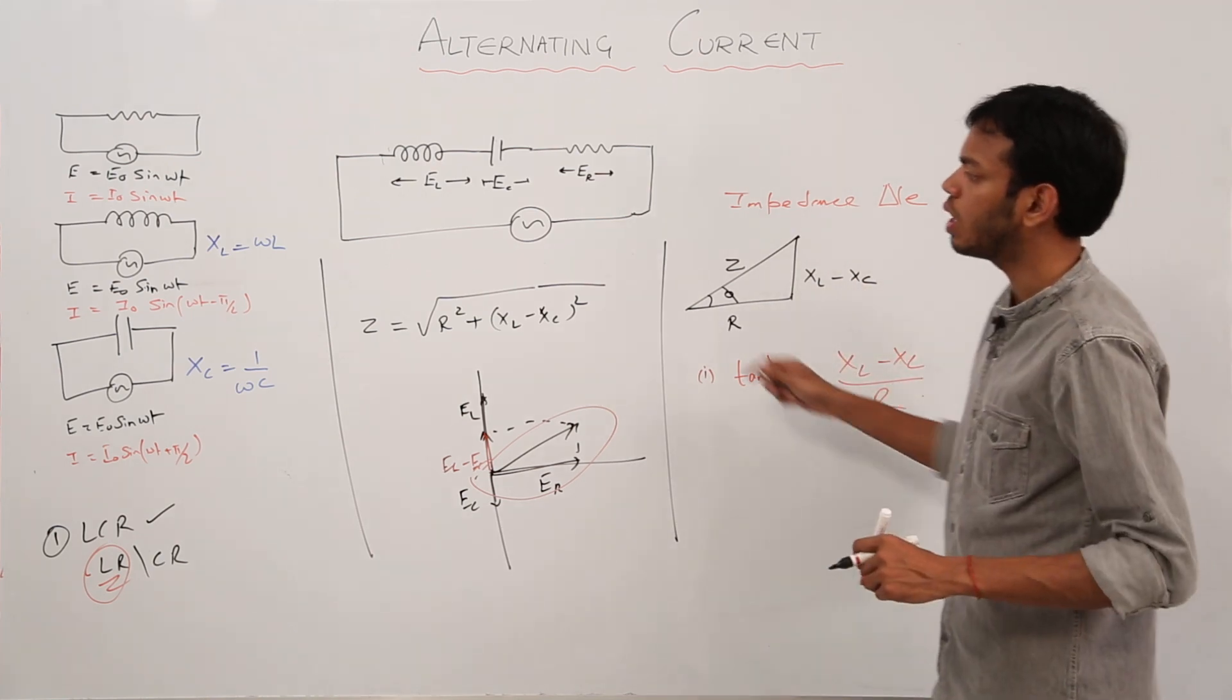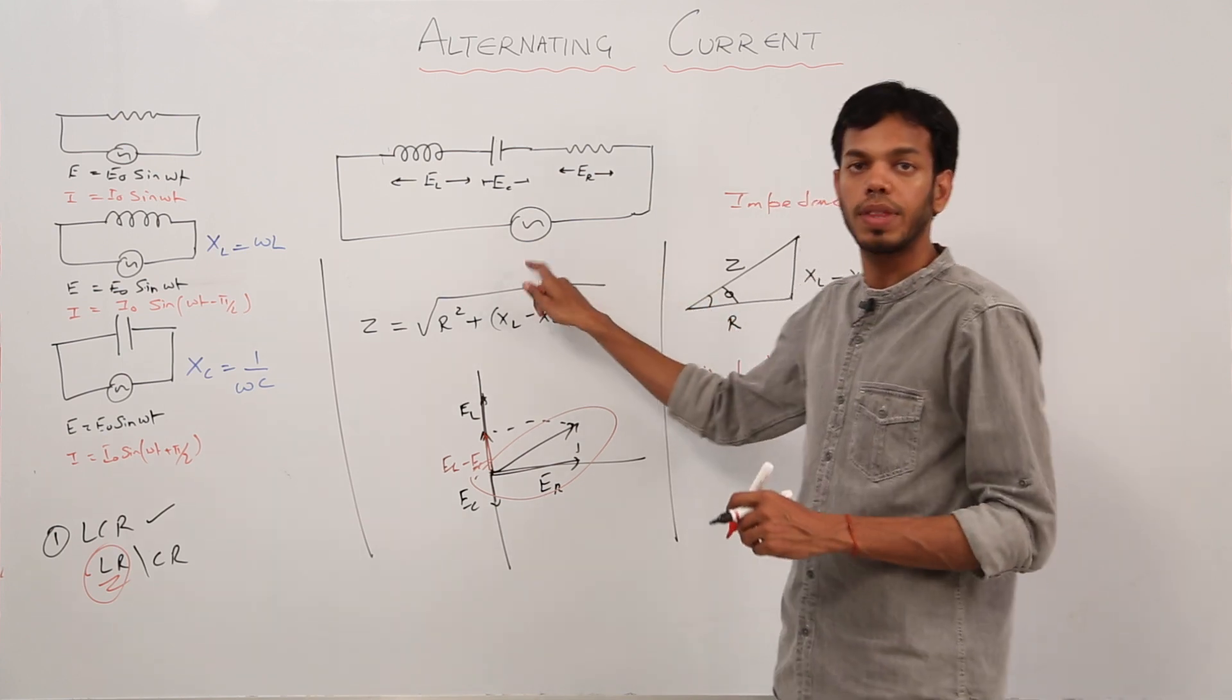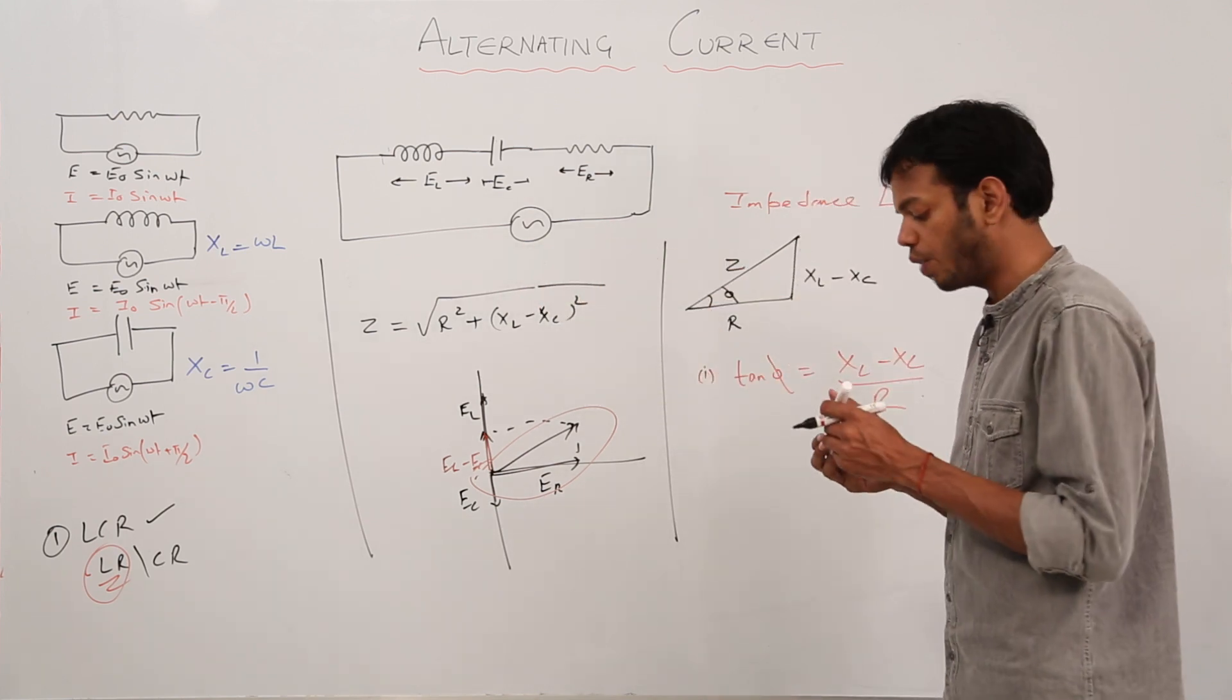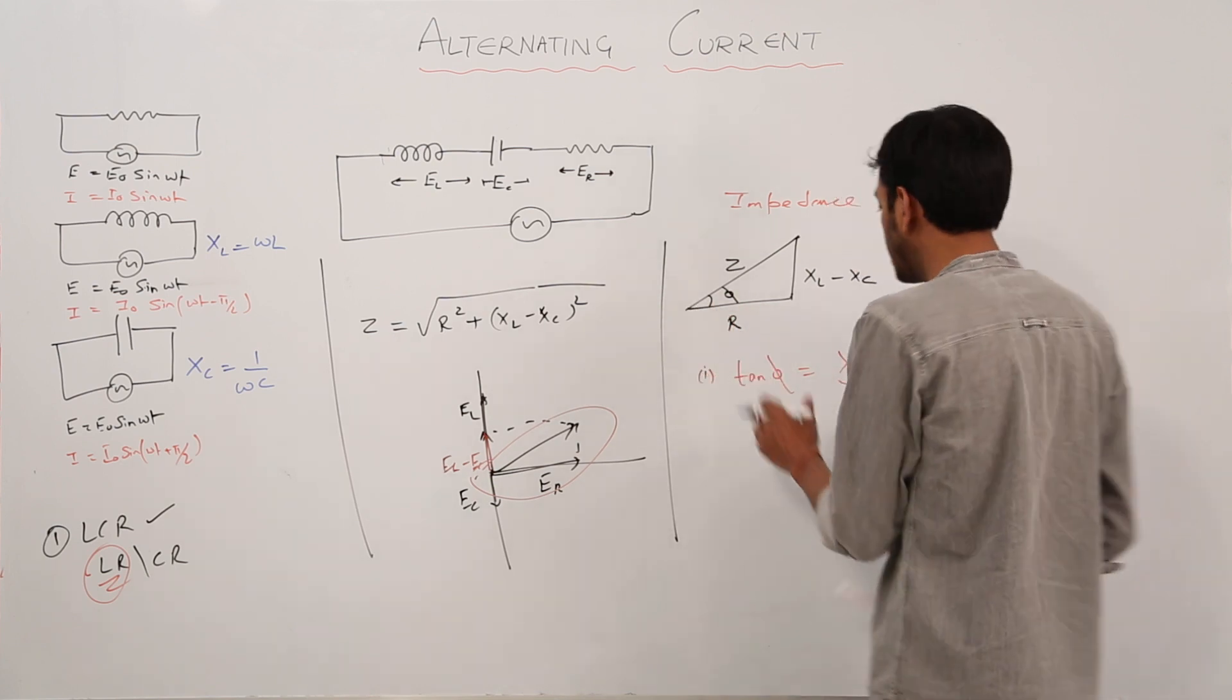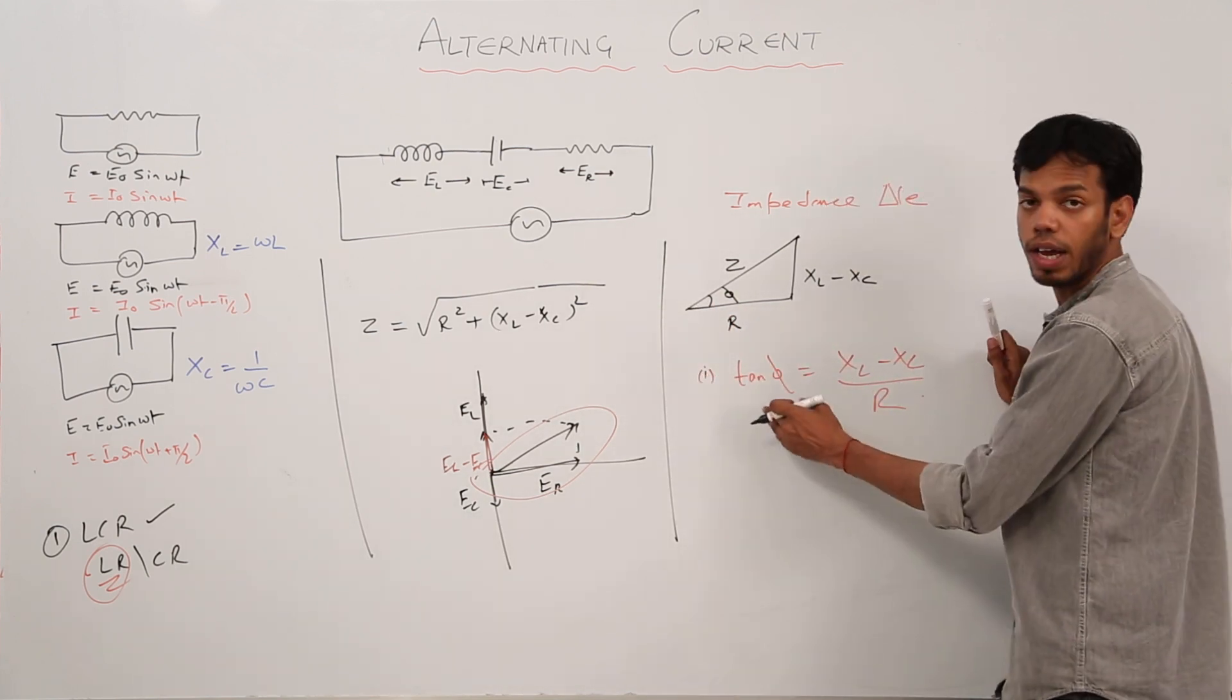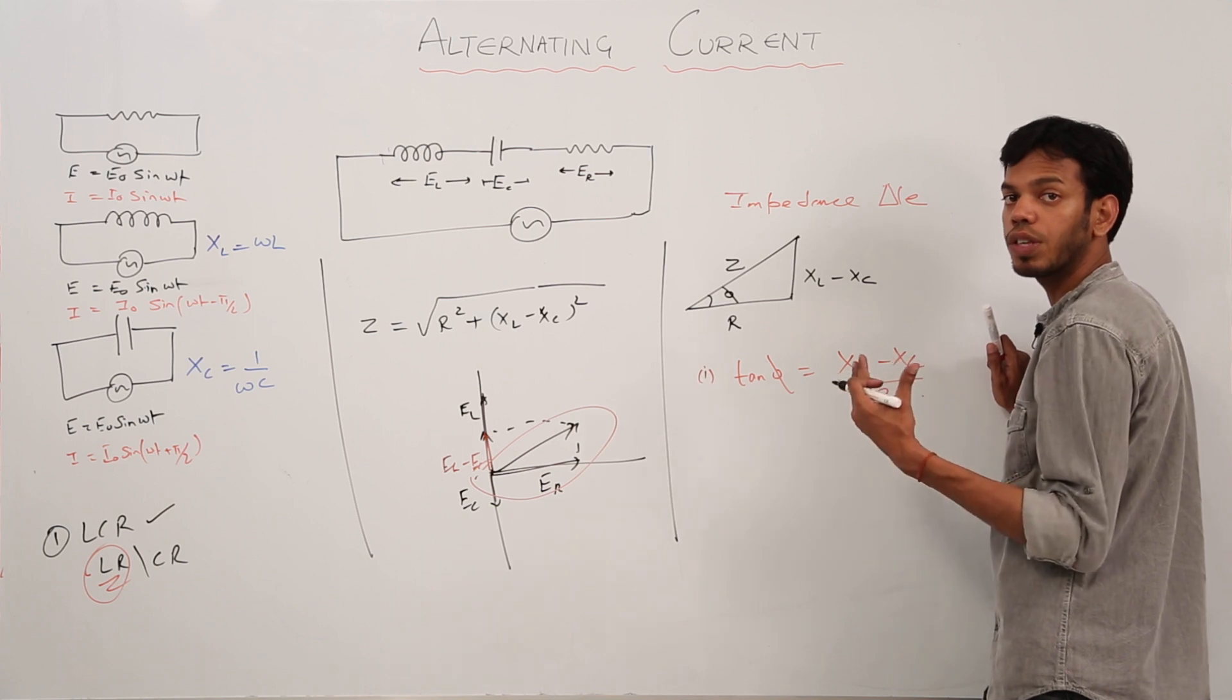This will give you the value when I wrote that current could be in some phase difference with the voltage, which can be figured out later. This is the point from where you can calculate the value of phi, what is the phase difference between current and voltage.